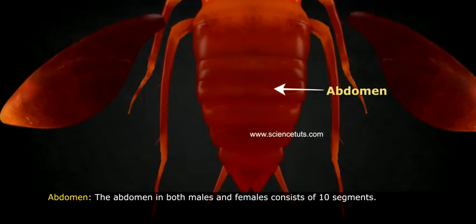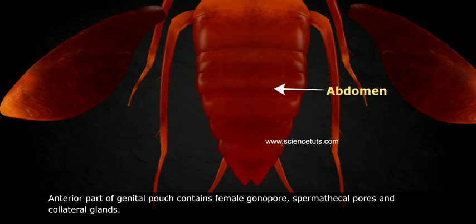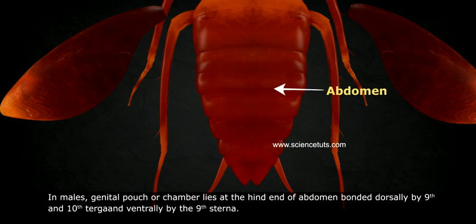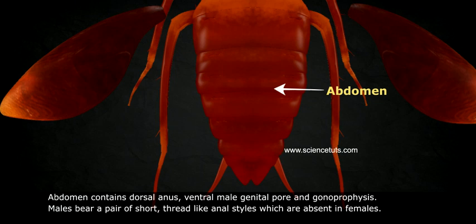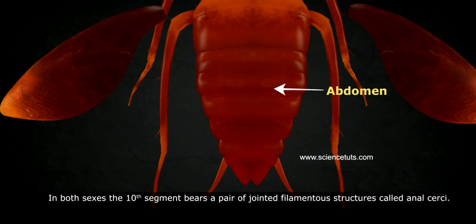The abdomen in both males and females consists of ten segments. The seventh sternum is boat-shaped and, together with the eighth and ninth sterna, forms a brood or genital pouch. The anterior part of the genital pouch contains the female gonopore, spermathecal pores, and collateral glands. In males, the genital pouch lies at the hind end of the abdomen, bounded dorsally by the ninth and tenth tergites and ventrally by the ninth sternum, containing the dorsal anus, ventral male genital pore, and gonapophyses. Males bear a pair of short thread-like anal styles, absent in females. In both sexes, the tenth segment bears a pair of jointed filamentous structures called anal cerci.